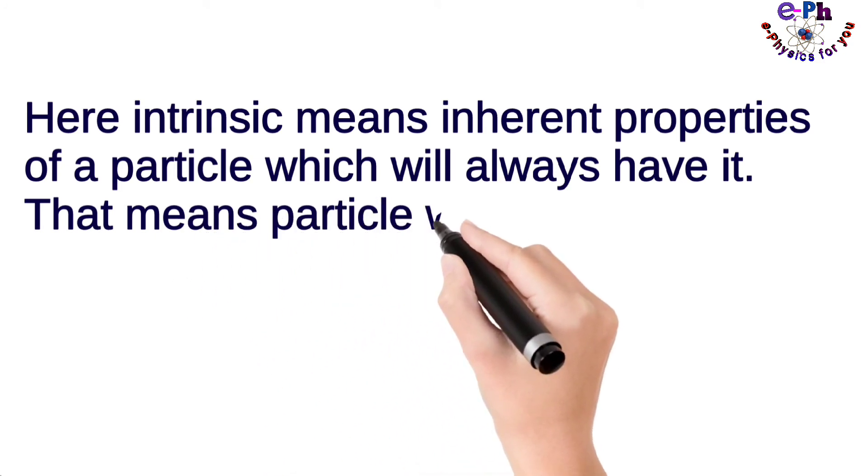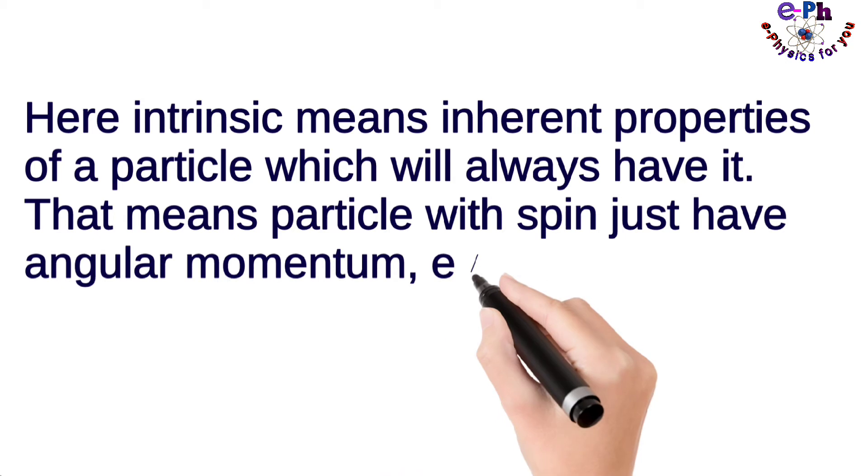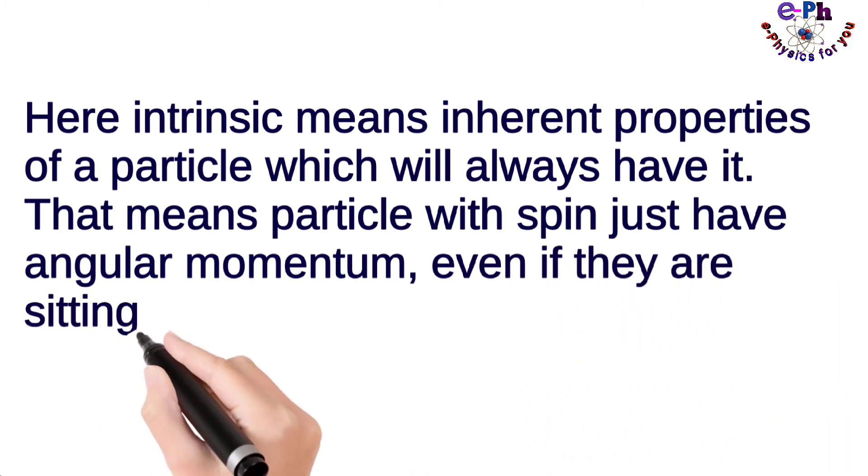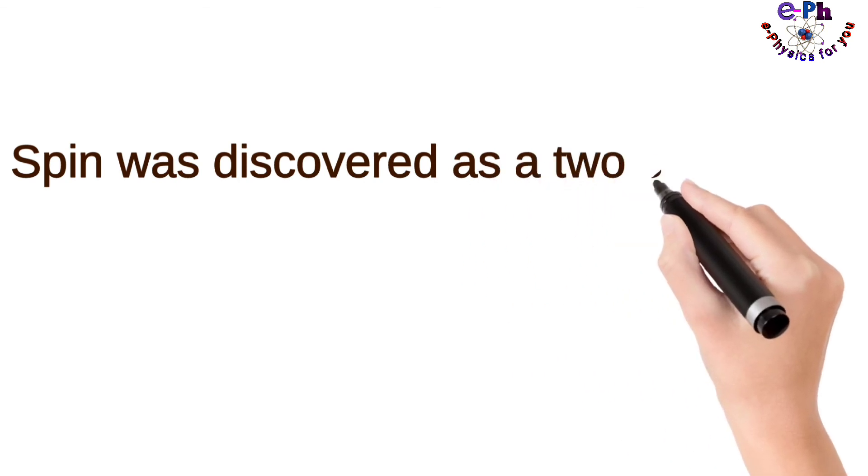That means particles with spin just have angular momentum even if they are sitting totally still. Spin was discovered as a two-state quantum degree of freedom associated with a magnetic moment.